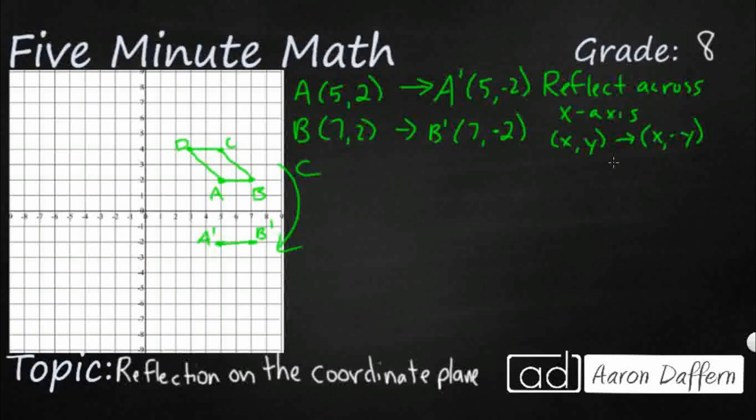So C is 5,4. So it's pretty simple here. We're going to keep our 5, change the y to a negative. So it's going to be 5, negative 4. So it's going to come right down here, and that's our C prime.